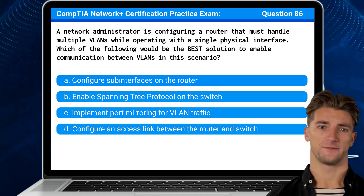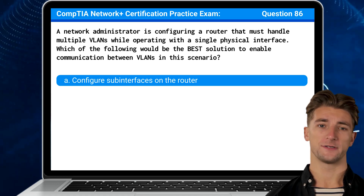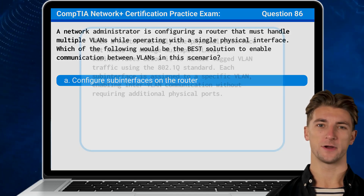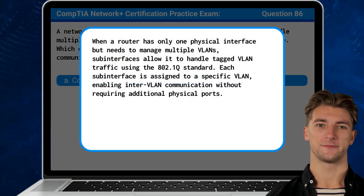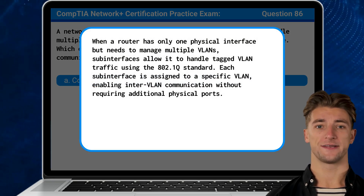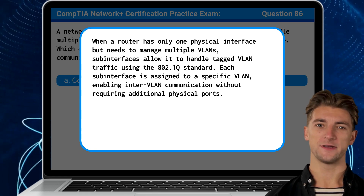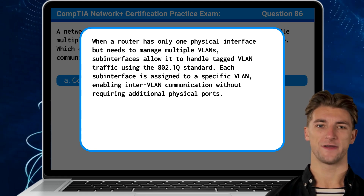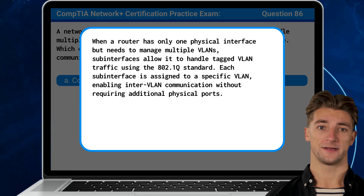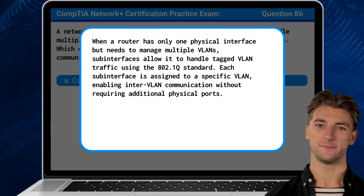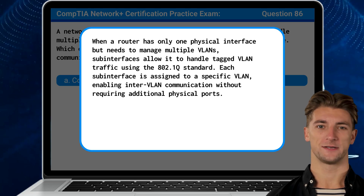The answer is A: configure sub-interfaces on the router. When a router has only one physical interface but needs to manage multiple VLANs, sub-interfaces allow it to handle tagged VLAN traffic using the 802.1Q standard. Each sub-interface is assigned to a specific VLAN, enabling inter-VLAN communication without requiring additional physical ports.